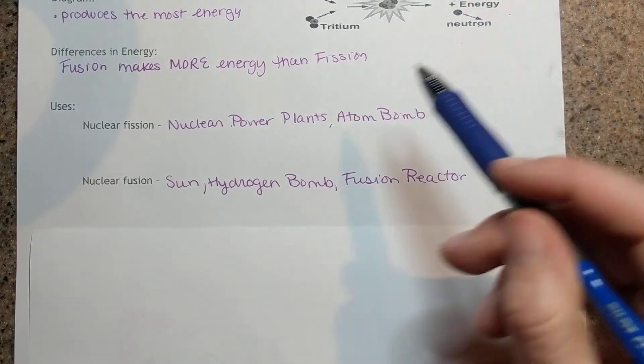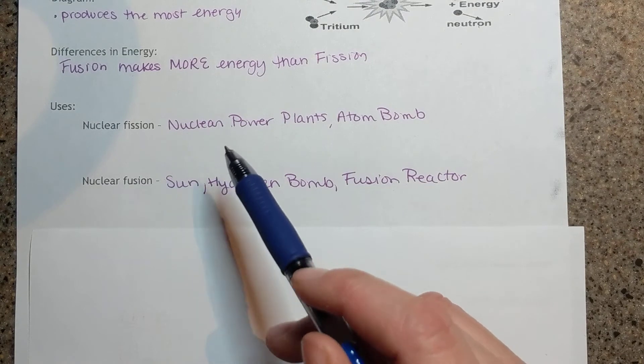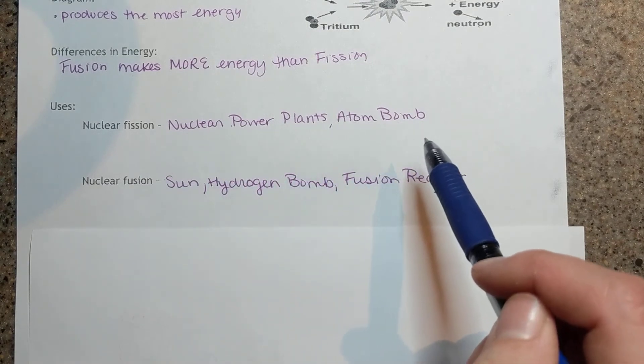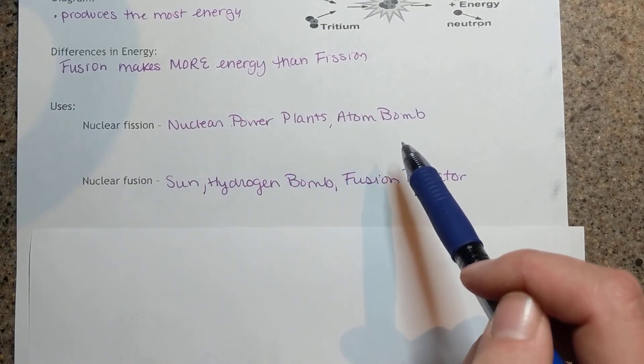Some different uses: nuclear fission occurs in nuclear power plants and it occurred in the first atom bomb, looking at the Manhattan Project.